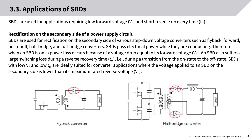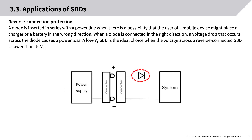An SBD also suffers a large switching loss during the reverse recovery time TRR, i.e., during a transition from the on state to the off state. SBDs with low VF and low TRR are ideally suited for converter applications where the voltage applied to an SBD on the secondary side is lower than its maximum rated reverse voltage VR.